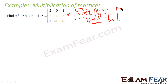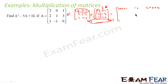For the first row, first column: 2×2 + 0×2 + 1×1 = 5. First row, second column: 2×0 + 0×1 + 1×(-1) = -1. First row, third column: 2×1 + 0×3 + 1×0 = 2.